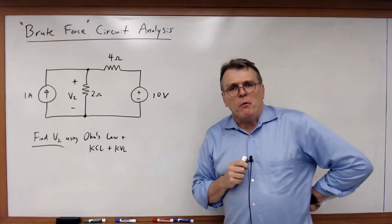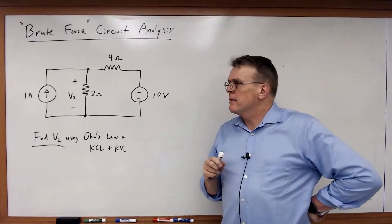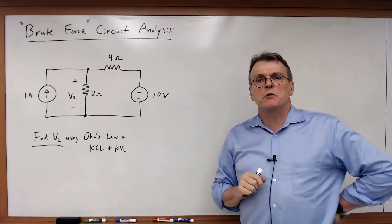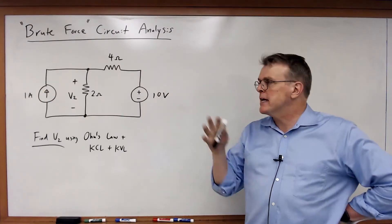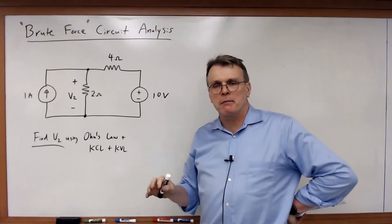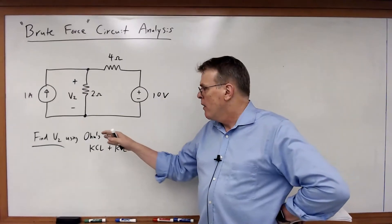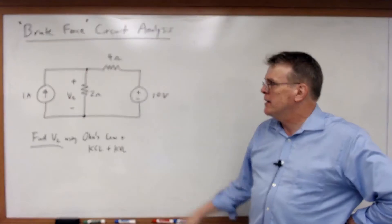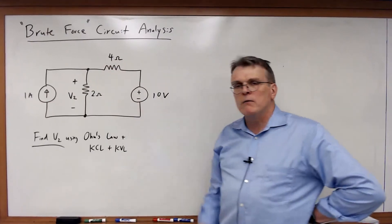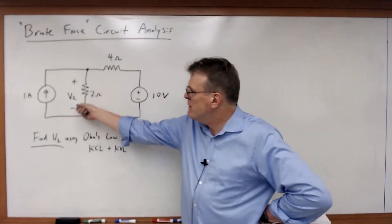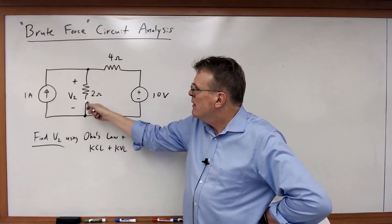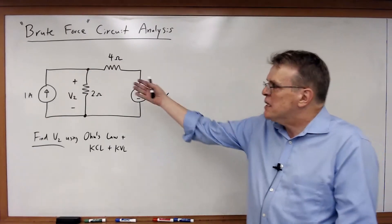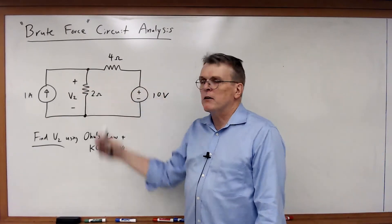Let's look at an example of what I call brute force circuit analysis, where we're going to take all those techniques we just looked at before — Ohm's Law plus KCL plus KVL — and in this case, we're going to use it to find a voltage in the circuit. Let's find V2, the voltage across this 2-ohm resistor, which is just given to us with that particular polarity.